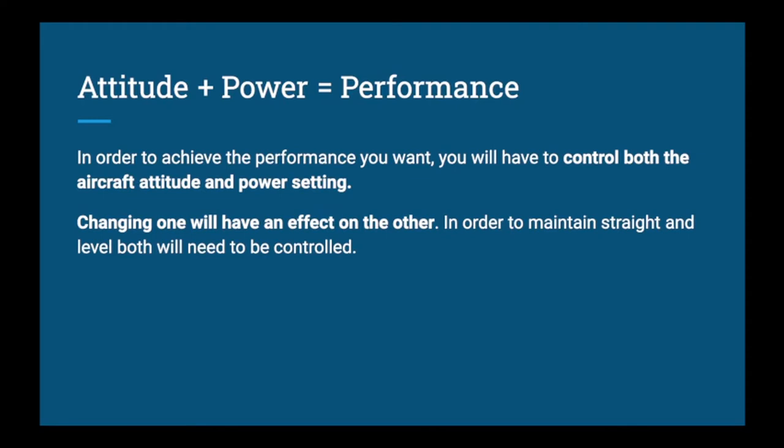You're going to hear 'attitude plus power equals performance' a lot through your flight training. Basically, if you want to maintain the same performance and you adjust either your attitude or your power, you'll have to adjust the other one to compensate. They each have an effect on each other. In order to maintain straight and level flight while speeding up or slowing down, you must control both attitude and power.